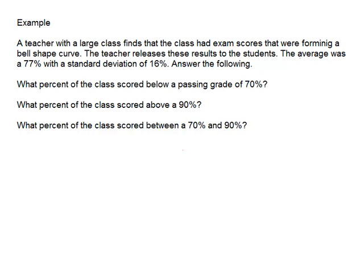Let's say you're in a class and the teacher has a large class, a large number of students, and they tell you that there was a bell-shaped curve to the exam scores. They release the following two pieces of information. They say that the average was a 77% with a standard deviation of 16%. Answer the following: What percent of the class scored below a passing grade of 70%? What percent of the class scored above a 90%? And what percent of the class scored between 70% and 90%?